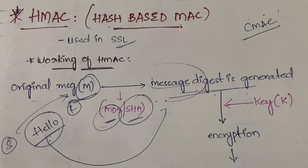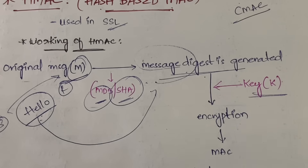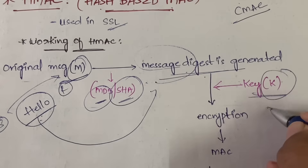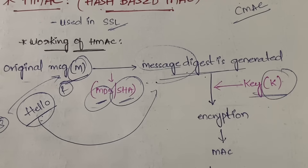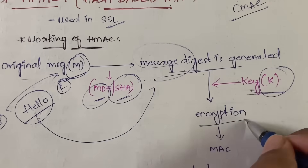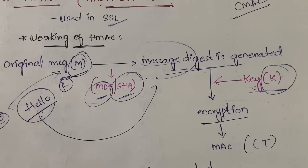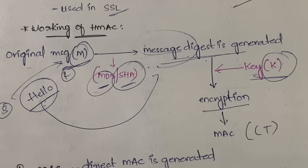Once you divide the message into sub-blocks, with the help of a key K you perform encryption. This key remains the same for both sender and receiver - MAC uses symmetric key cryptography, meaning the same key is used for both encryption and decryption. Once you encrypt the original message, you get the ciphertext, and that ciphertext is nothing but the MAC.